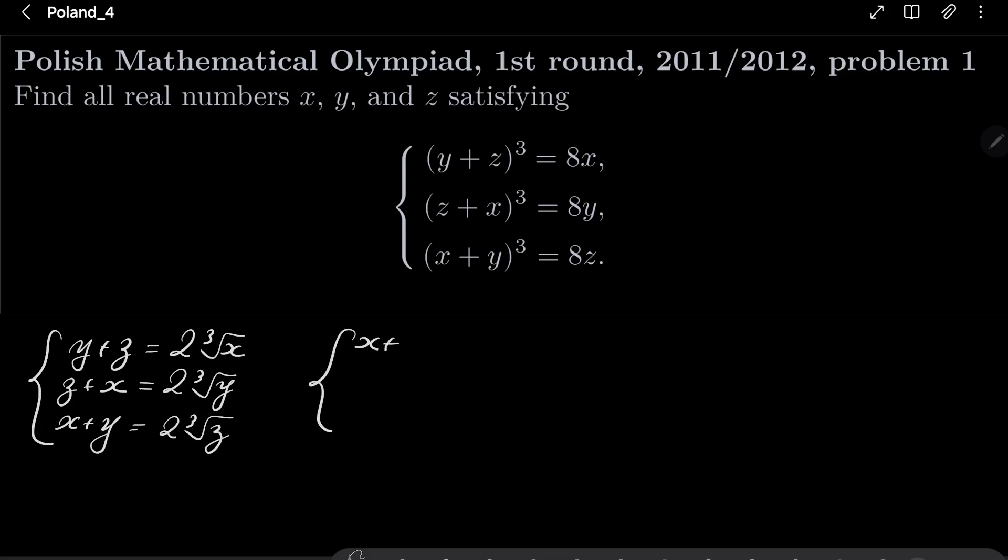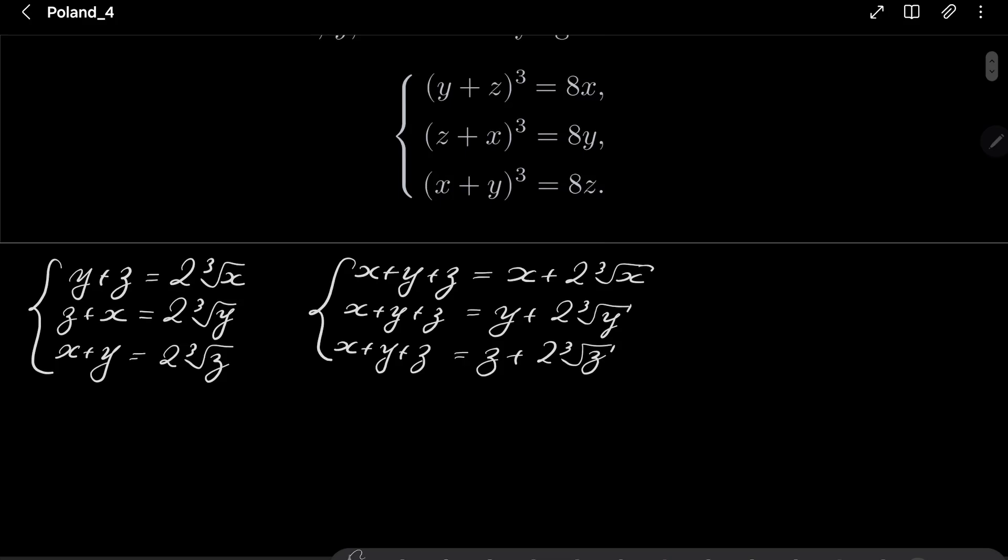Alright, let's take our first equation and add x, take the second equation and add y, and take the last equation and add z. Notice that from these three equations we see that x + 2∛x = y + 2∛y = z + 2∛z.